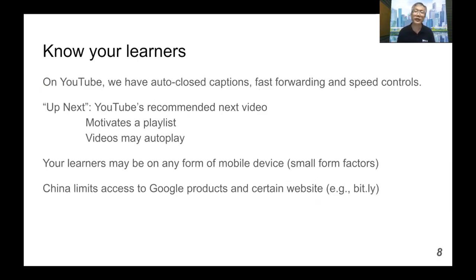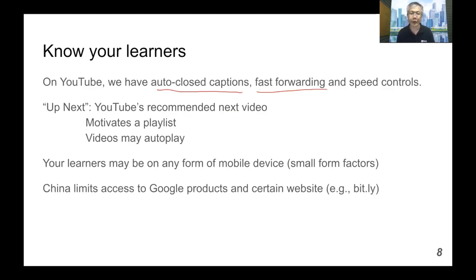Just as in the traditional classroom there are certain formats that work well and some that don't, in the online environment — for example on YouTube — there are certain facilities we don't have in a traditional classroom. For example, auto-closed captions, immediate fast-forwarding and rewinding to jump anywhere in the lecture, as well as speed controls to slow down or speed up the lecture.